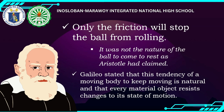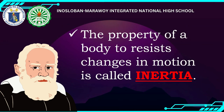Galileo stated that a moving body's tendency to keep moving is natural, and that every material object resists changes to its state of motion — affected by factors like friction and air resistance. The ability of an object to resist change in motion is known as inertia, which is stated in the first law of motion by Sir Isaac Newton.